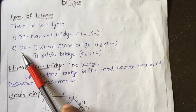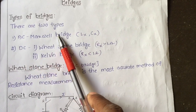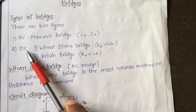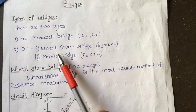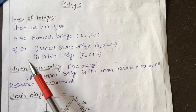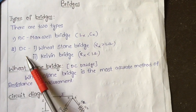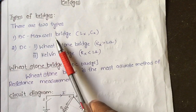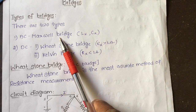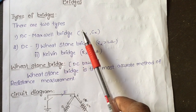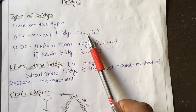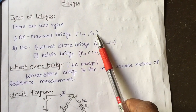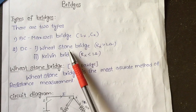Maxwell bridge comes under AC bridge, whereas Wheatstone bridge and Kelvin bridge come under DC type of bridges. By using Maxwell bridge we are going to calculate or measure unknown inductance or unknown capacitance.